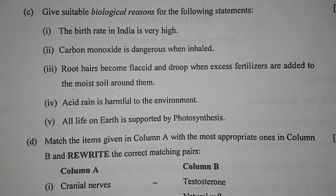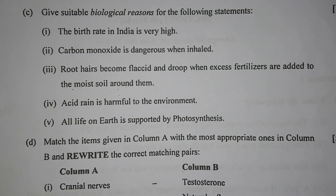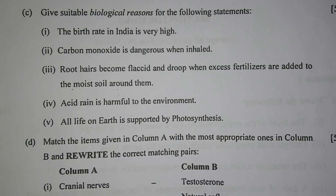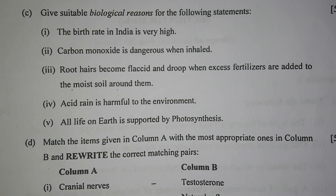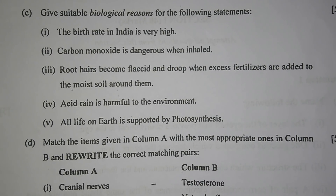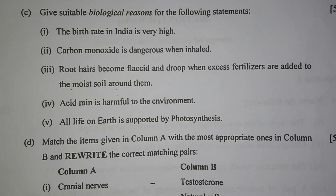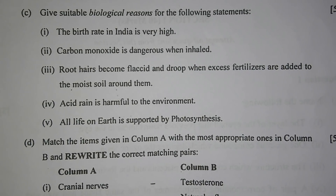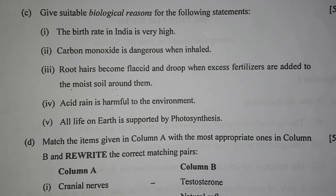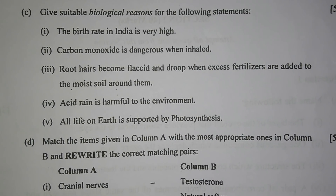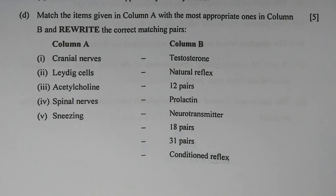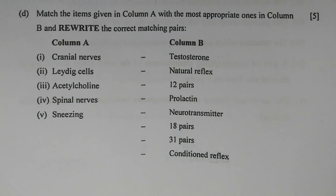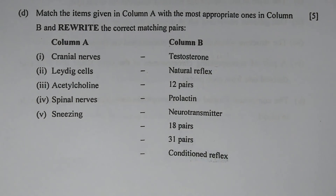Number 5 — all life on earth is supported by photosynthesis. The reason is every food chain begins with producers, that is plants. Photosynthesis is the process by which plants manufacture their own food, hence it supports life.